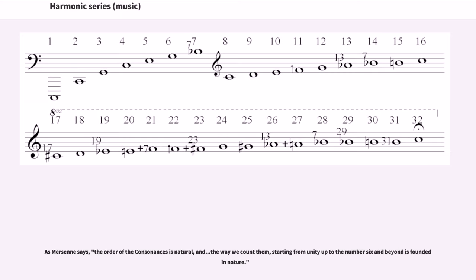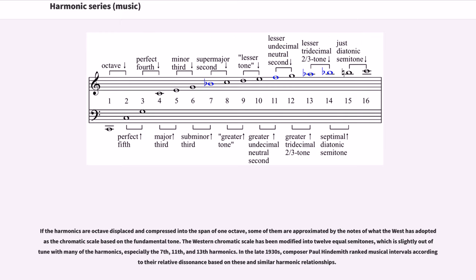As Mersenne says, the order of the consonances is natural, and the way we count them, starting from unity up to the number six and beyond, is founded in nature. If the harmonics are octave-displaced and compressed into the span of one octave, some of them are approximated by the notes of what the West has adopted as the chromatic scale based on the fundamental tone. The Western chromatic scale has been modified into 12 equal semitones, which is slightly out of tune with many of the harmonics, especially the 7th, 11th, and 13th harmonics.